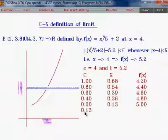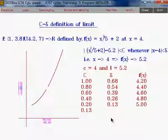What happens when epsilon is equal to 0.13? Now this projection from the epsilon neighborhood of L is not reaching the curve, and the curve is not able to transform on the x-axis. So we are not getting a corresponding delta value here.